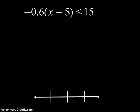Let's try another one. Negative 0.6 multiplied by the quantity of x minus 5, which is less than or equal to 15. Well, there's two different ways you could really do this problem. One is you could use the distributive property. You take negative 0.6 and multiply it by x and the same by negative 5 here.